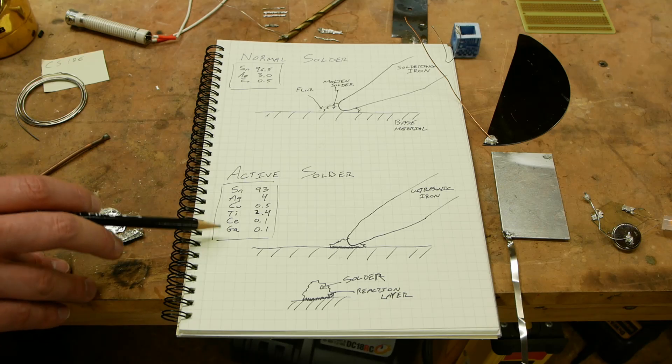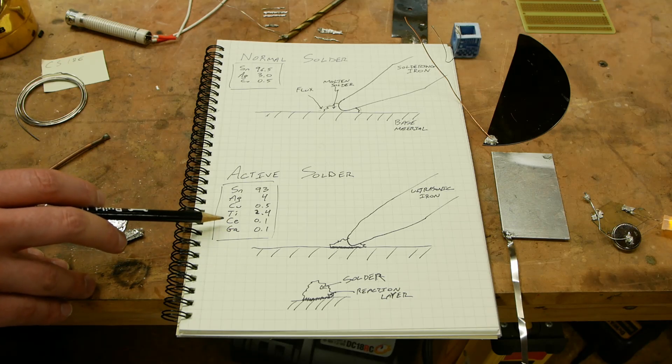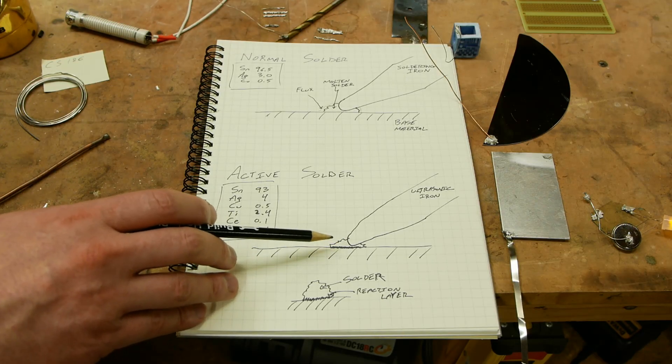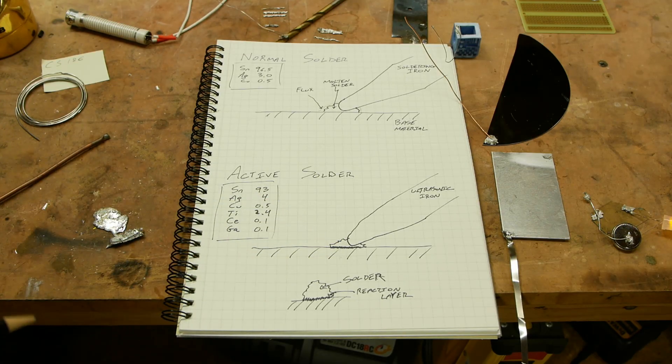So a couple of these other ingredients help with that problem. The cerium is also quite active and it somehow forms a protective bubble around these titanium rich grains in the solder.